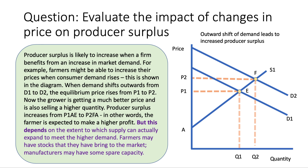Good news — well, in theory yes. But this depends on the extent to which supply can actually expand to meet the higher demand. Hopefully farmers have some stocks they can bring to market. Manufacturers might have some spare capacity. But it could well be the case that they face limited spare capacity and their costs may start to rise substantially if they have to increase production, in which case producer surplus would be constrained.